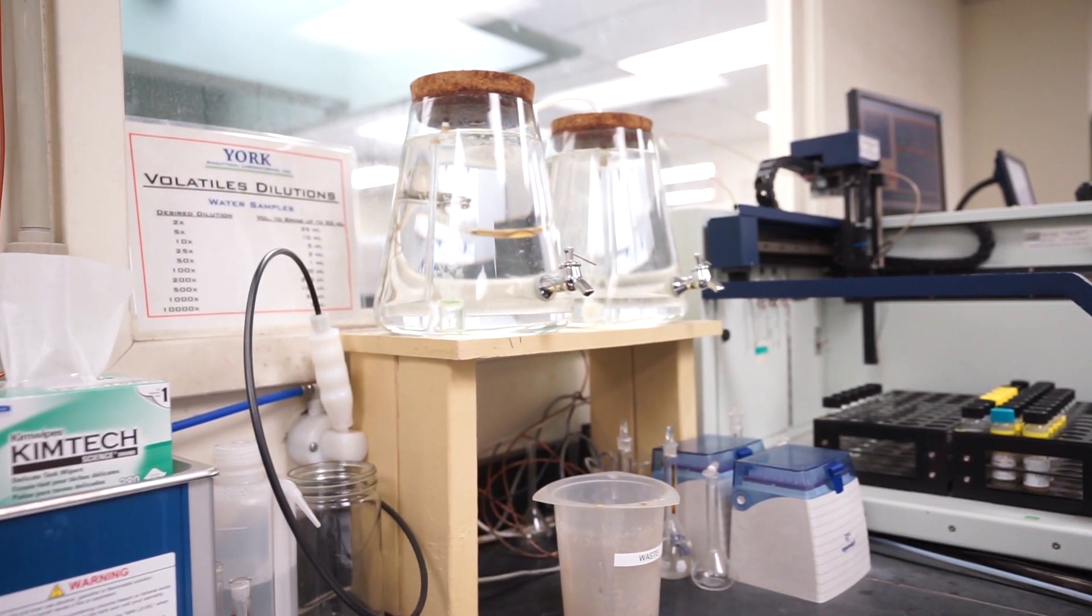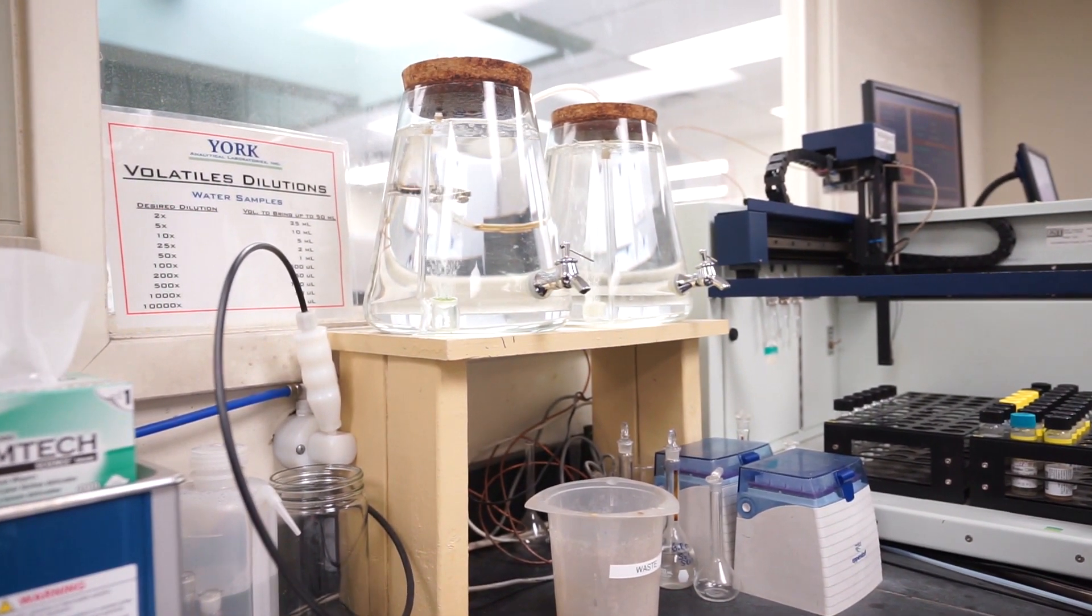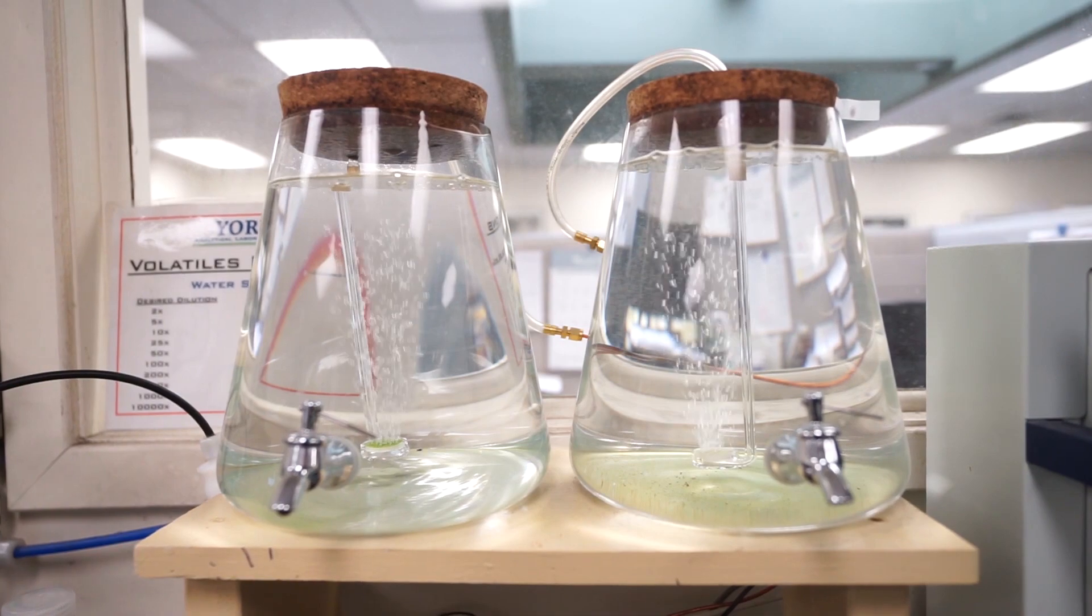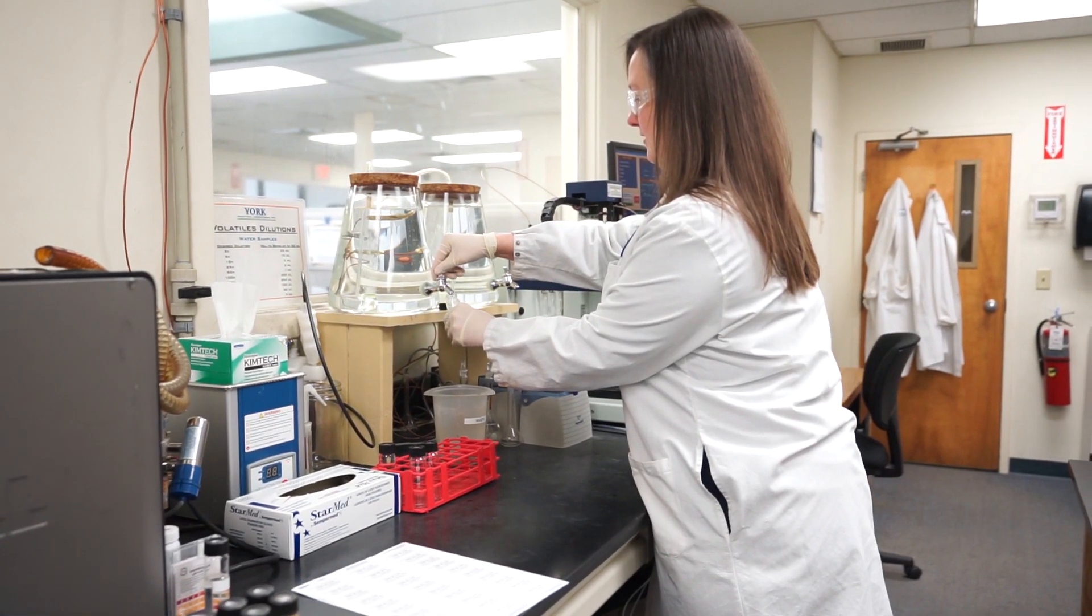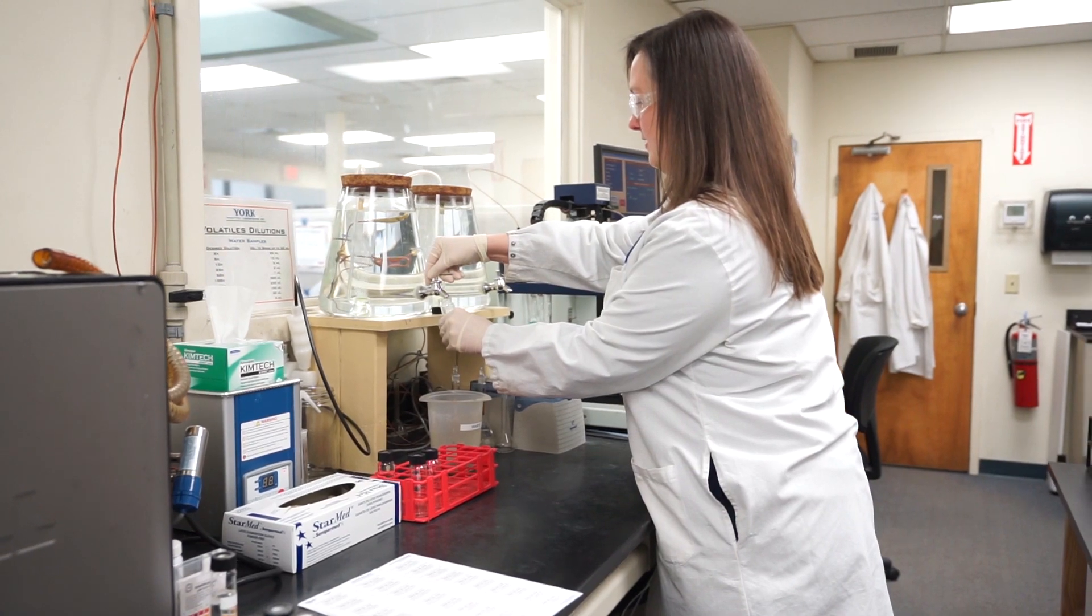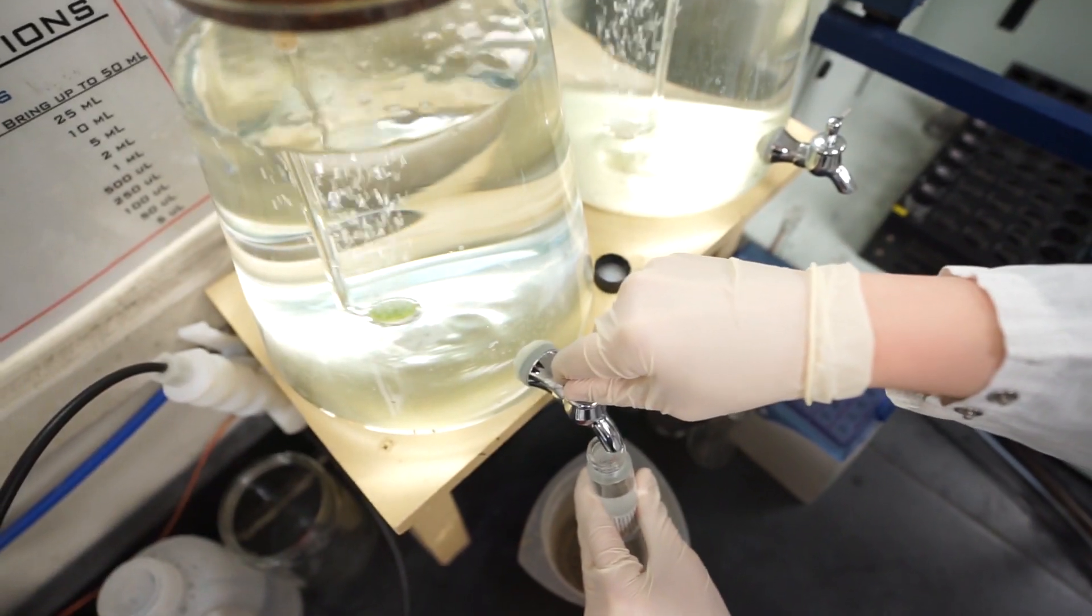Our trip blanks are prepared in our volatiles laboratory with purged water. It is free from laboratory contaminants such as acetone and methylene chloride, which we do not like to see in our volatiles analyses.